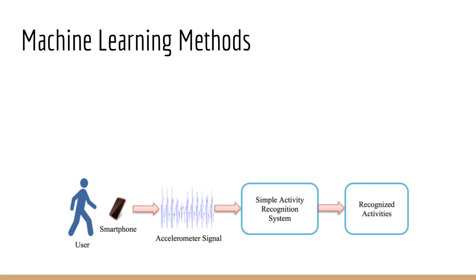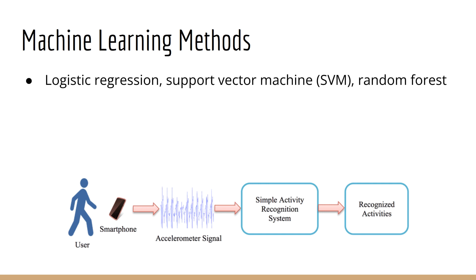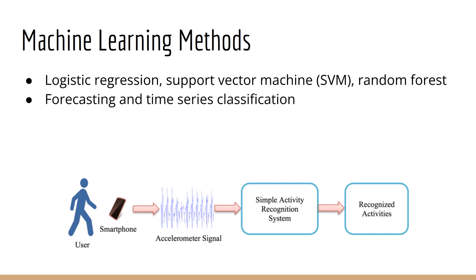After learning about the classic time series methods, we will move on to machine learning. In this section, we'll see how models like logistic regression, the support vector machine, and the random forest can be used for time series analysis. Thanks to the flexibility of machine learning, most of these models will let us do both forecasting and classification — for example, predicting what a user is doing based on readings from their smartphone accelerometer.